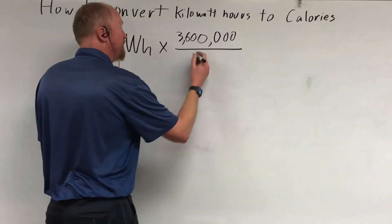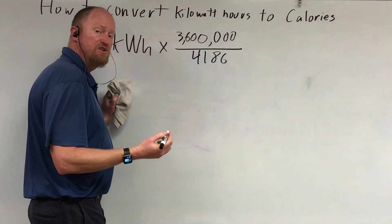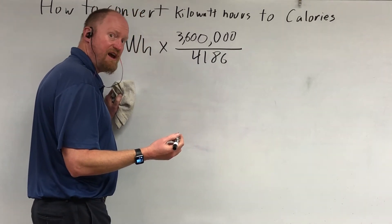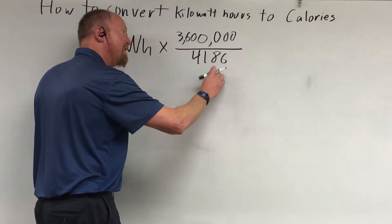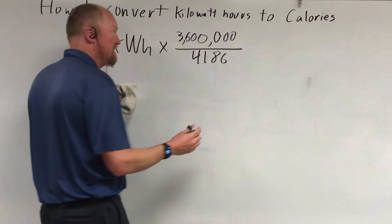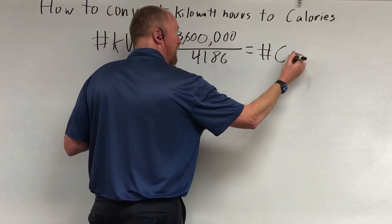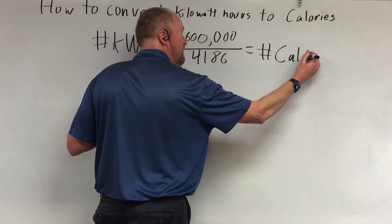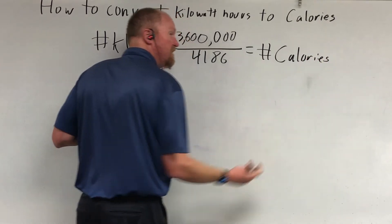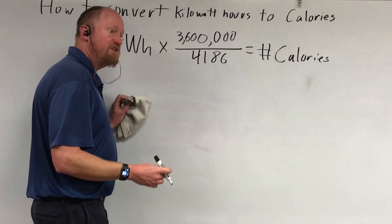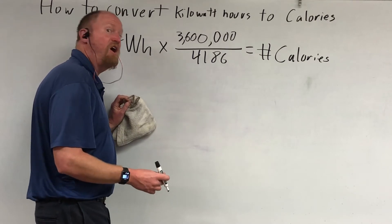We're not looking for joules, we're looking for calories. There are four thousand one hundred and eighty-six joules in a calorie, so you divide by that to get the number of calories. These are big calories — dietary calories, or kilocalories outside the USA — the calories on the back of your candy bar.